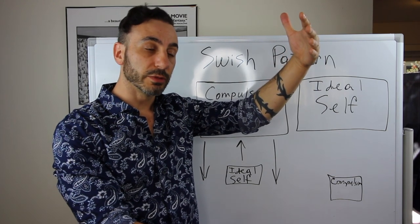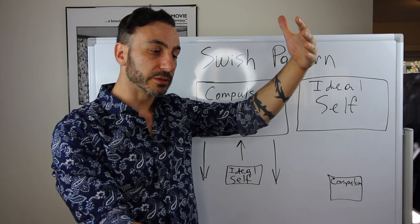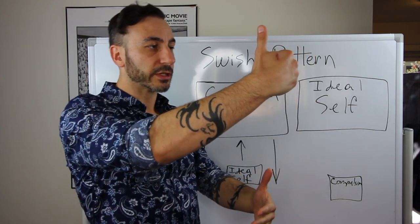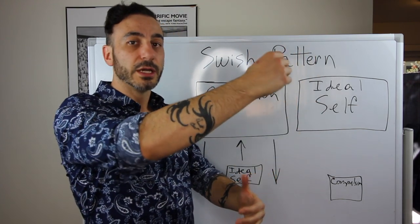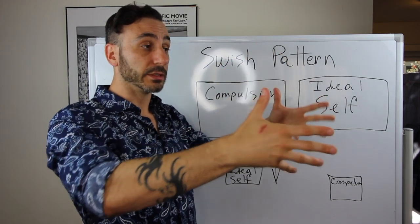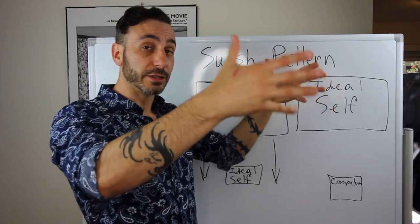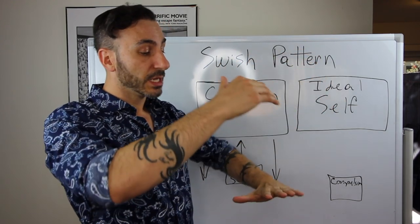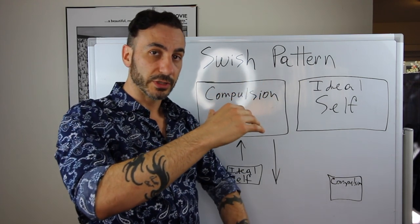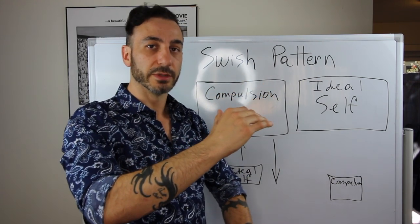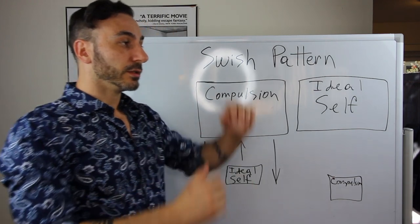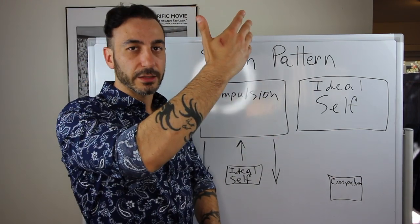Then, as quickly as possible, swish the ideal self image up — expand it, make it grow, make it big, make it bright and colorful, just like you had imagined it — and swish down the compulsion image so that it's dark and you can barely even see it anymore.